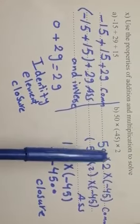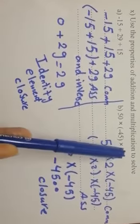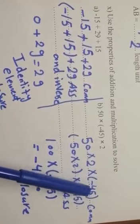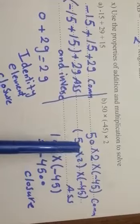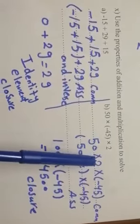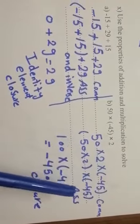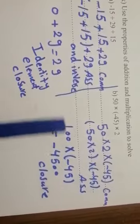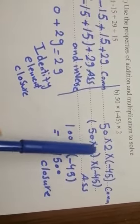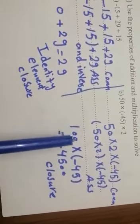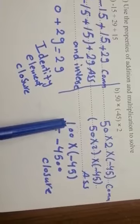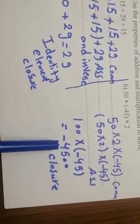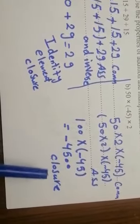Letter B: 50 times negative 45 times 2. Replace the places (commutative): 50 times 2 times negative 45. Put it in brackets (associative): 100 times negative 45. This equals negative 4,500. Closure.